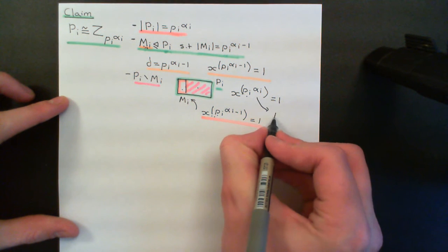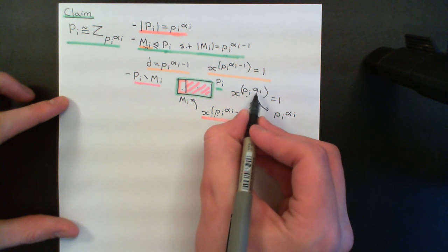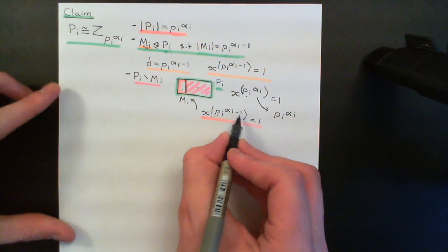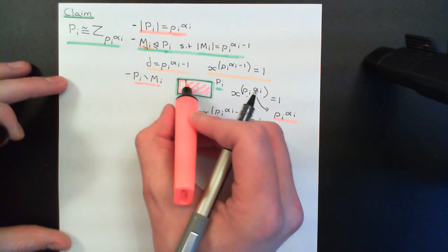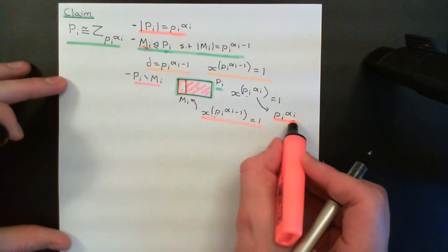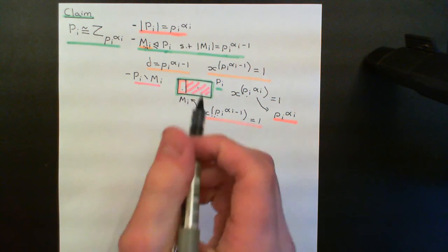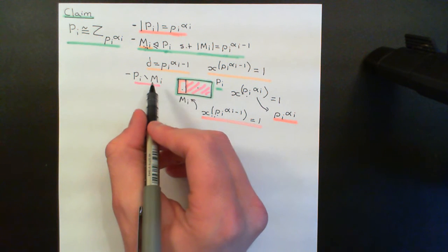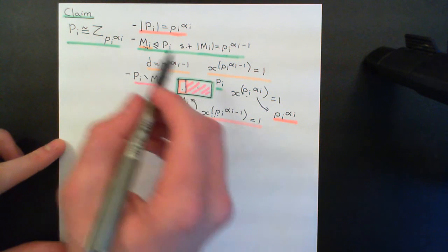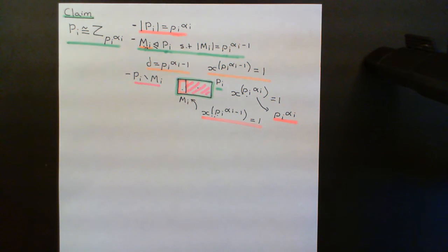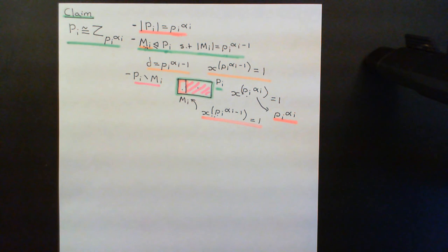So their order has to be p_i^α_i, because their order has to divide the order of the group but cannot be p_i^(α_i−1) — therefore it must be p_i^α_i. That means I have found loads of elements of Pi with order equal to the order of the group, p_i^α_i. Take whichever element you like from this portion — it must be a generator of the group. If you generate its cyclic subgroup, it must generate the entire group. Hence this group must be cyclic. So all of the Sylow subgroups are in fact cyclic and unique.